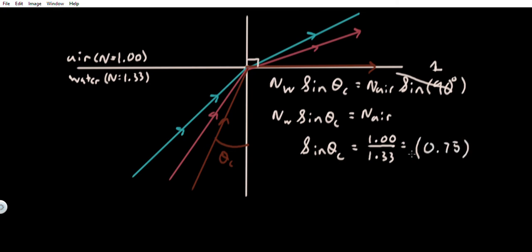Now if I take the arc sine of 0.75, I get that this angle theta sub c is approximately 48.5904 degrees.